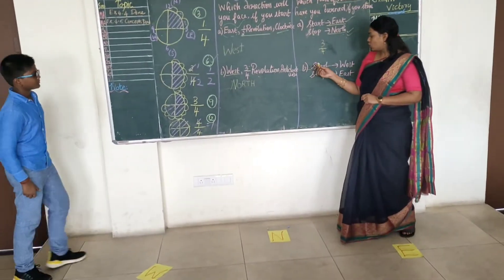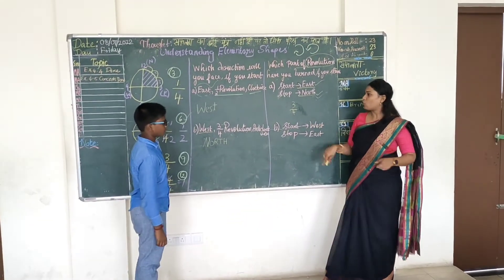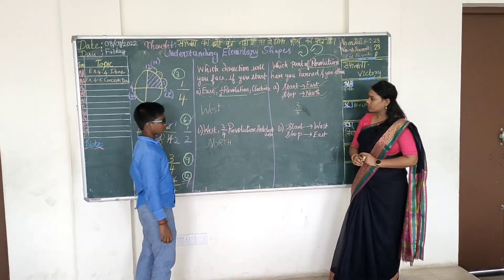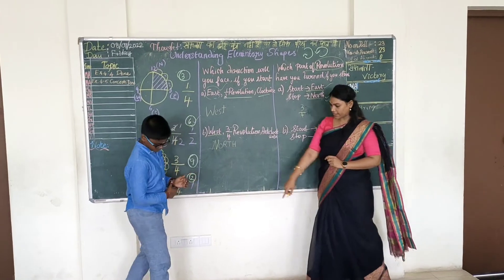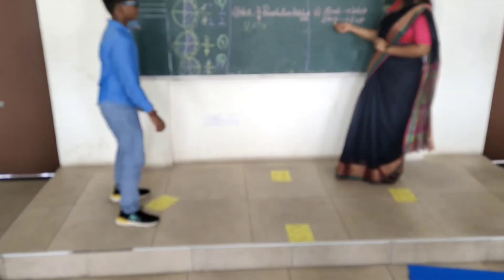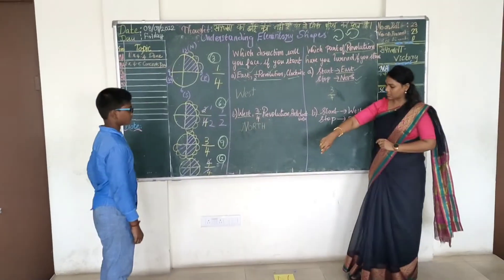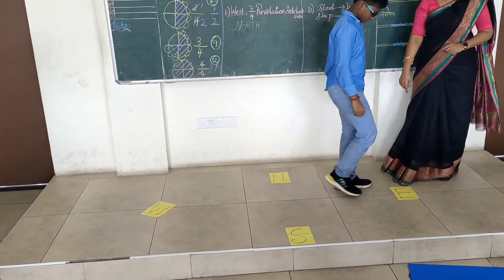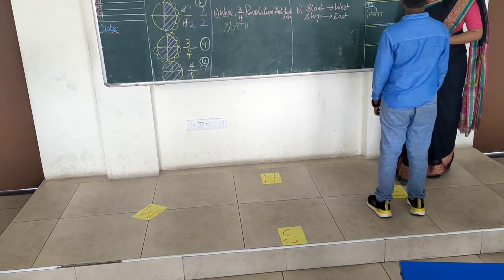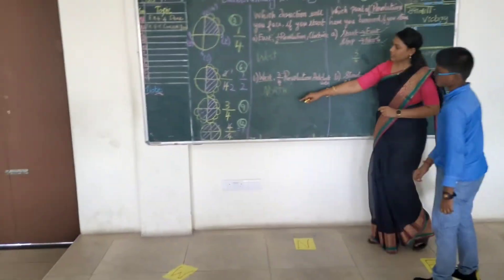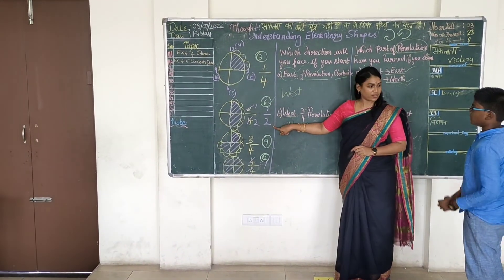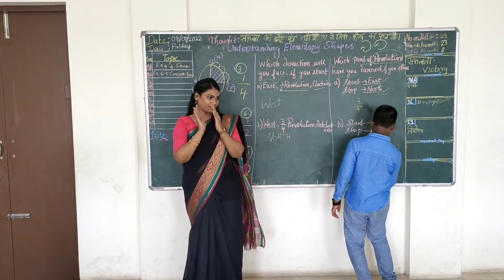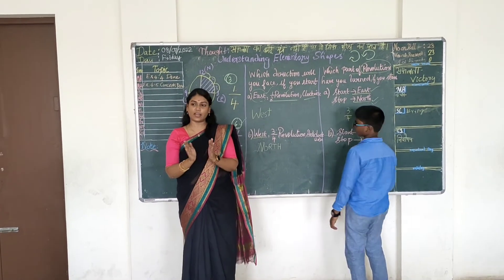Now start from west, move clockwise, and stop at east. Start: one, two, three, four, five, six. How many turns total? Six. And what is the fraction? One by two — that is 1/2 revolution. Very good. Thank you.